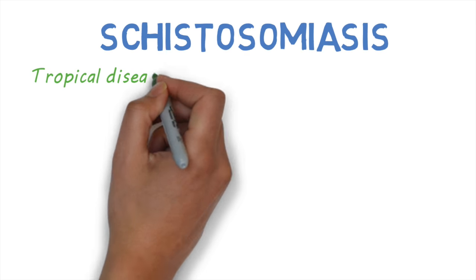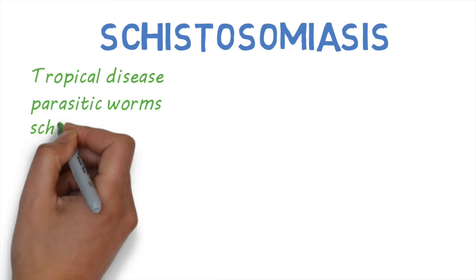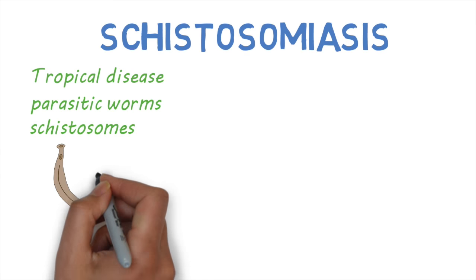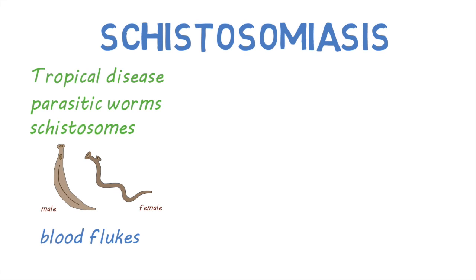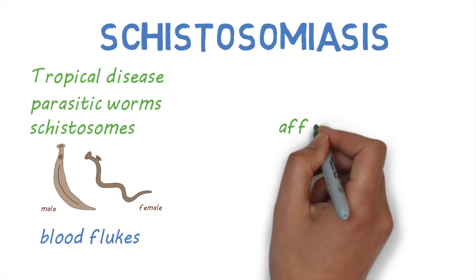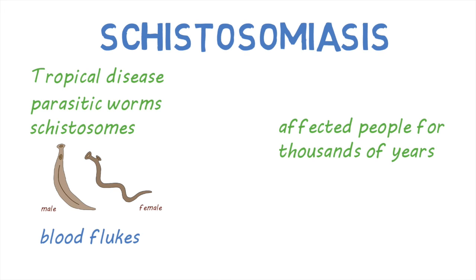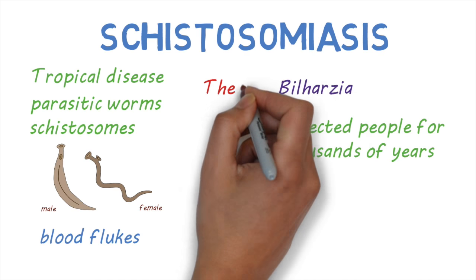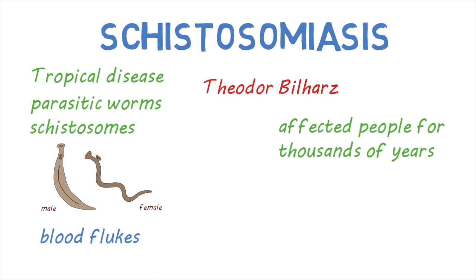Schistosomiasis is a tropical disease caused by a group of parasitic worms called schistosomes. These worms are also called blood flukes. The disease has affected people for thousands of years, and evidence of the disease has even been found in Egyptian mummies. Schistosomiasis is also known as bilharzia, named after Theodore Bilharz, who first described the parasite in humans.